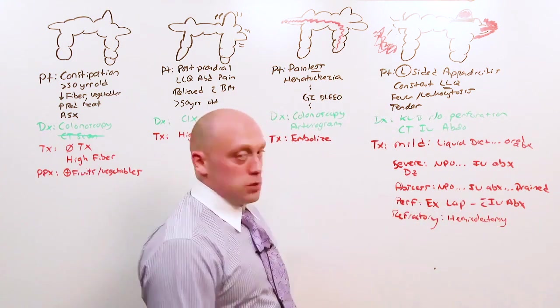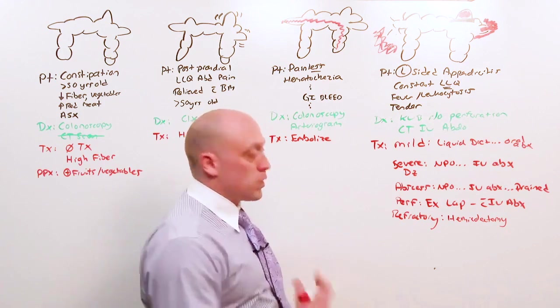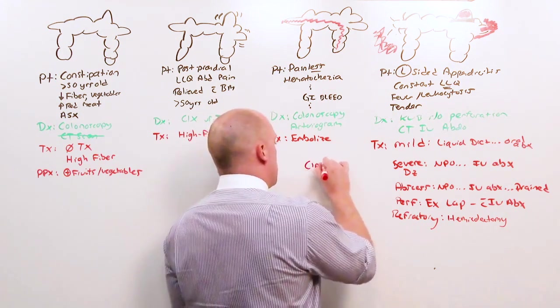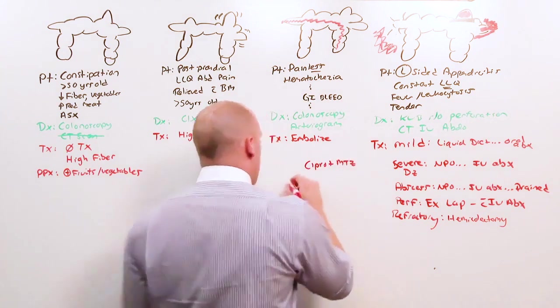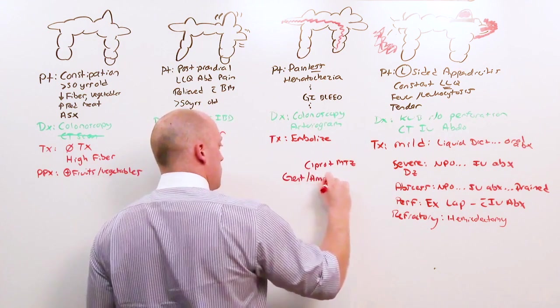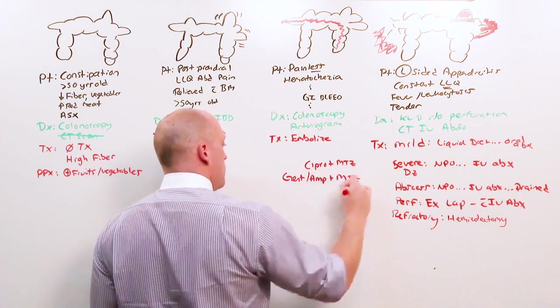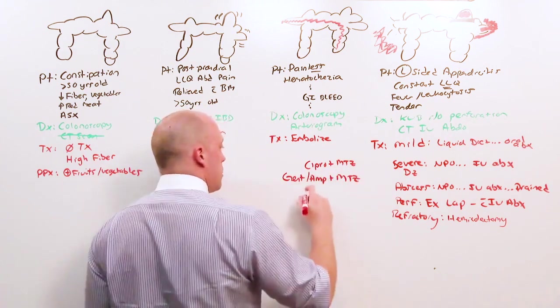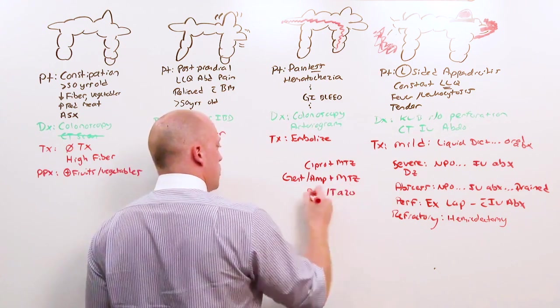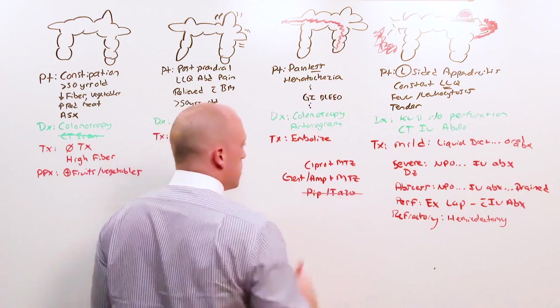So what antibiotics should you use? You're covering for gut flora. Gut flora can be covered with Cipro and metronidazole or the combination of gentamicin, ampicillin, and metronidazole. What you will see done often on the wards is Piptazo. Piptazo will always be wrong on the test because that's what everyone does in practice.